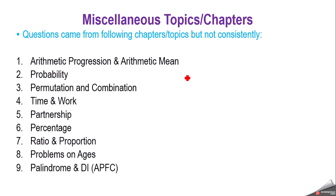Some random one or two questions you will find from miscellaneous topics. These include: arithmetic progression and arithmetic mean, probability, permutation and combination, time and work (e.g., 15 men and 10 women will complete a particular work in so many days), partnership-based questions, percentage-based questions, and ratio and proportion.